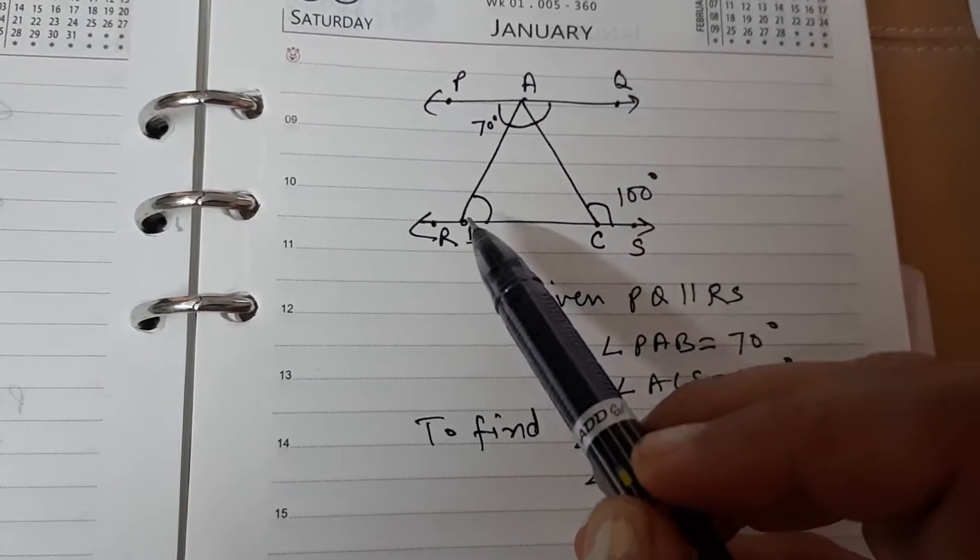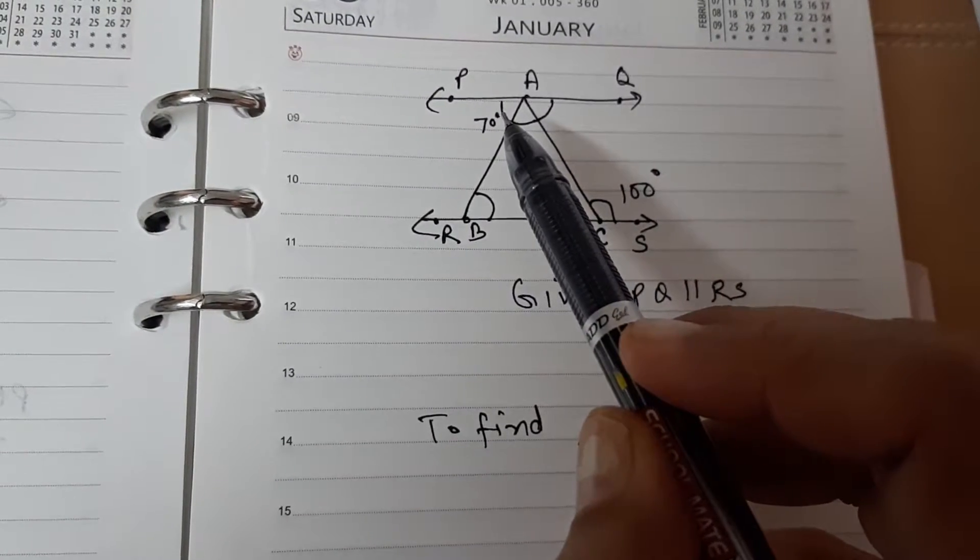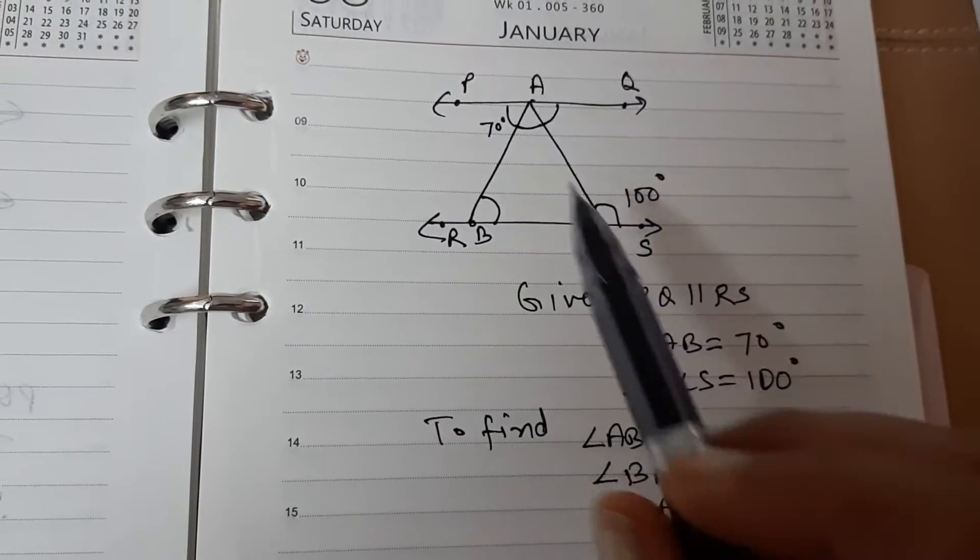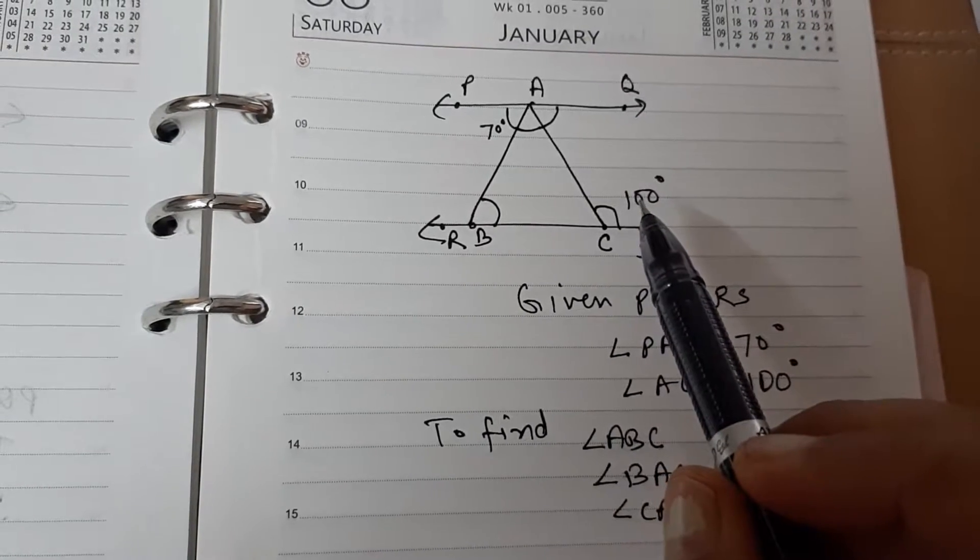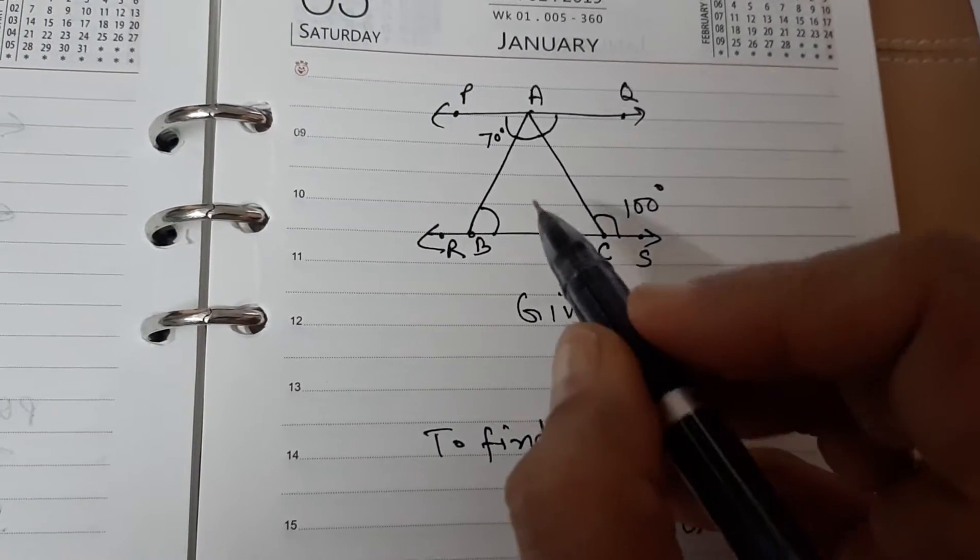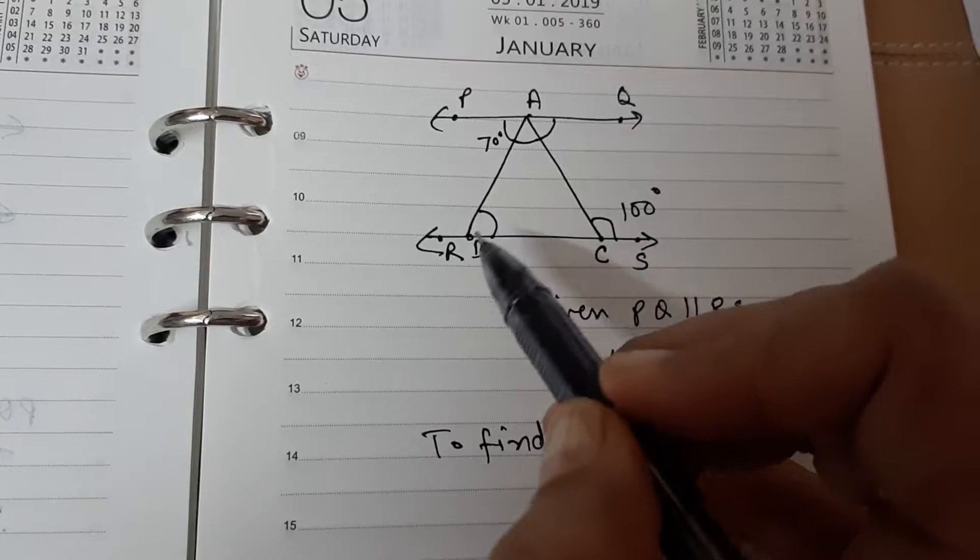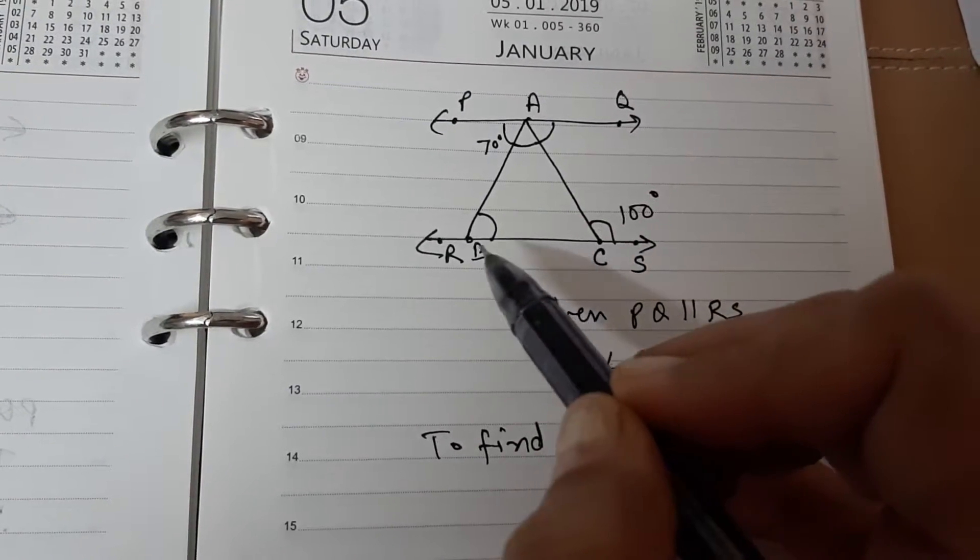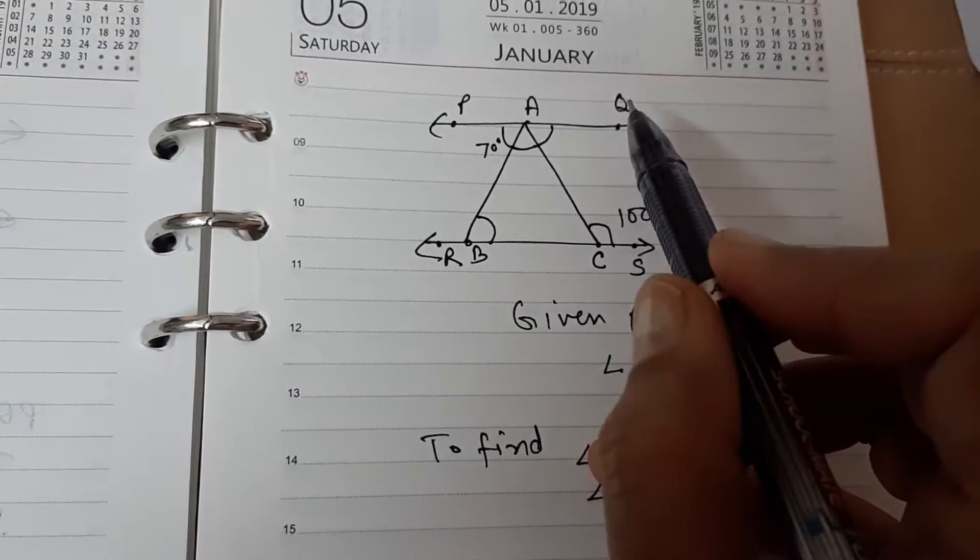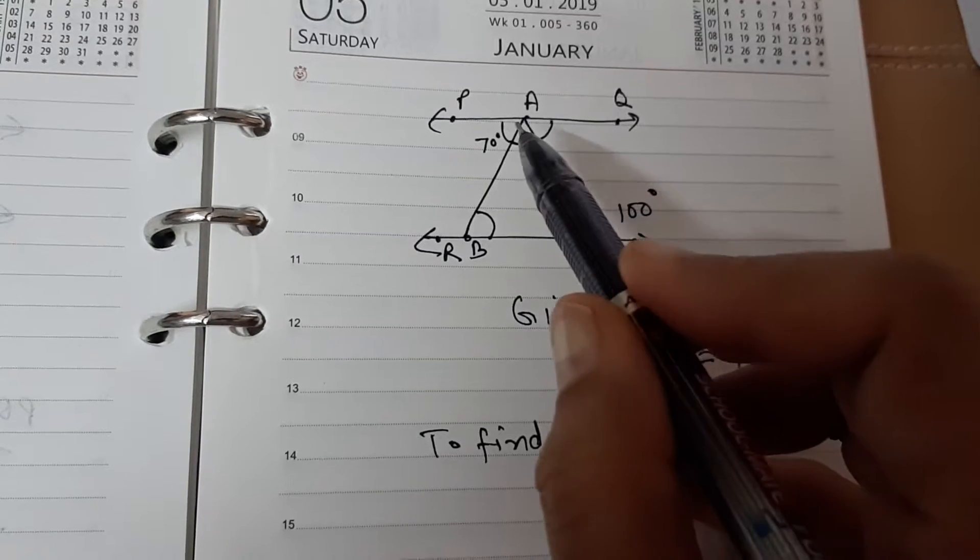Angle PAB equals 70 degrees and angle ACS is given to be 100 degrees. And we have to find angle ABC, angle BAC, and angle CAQ.